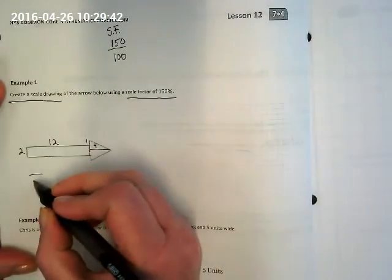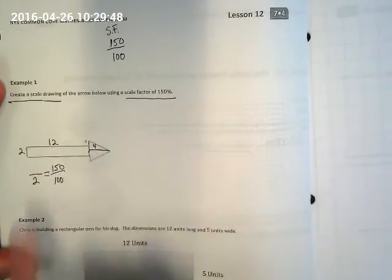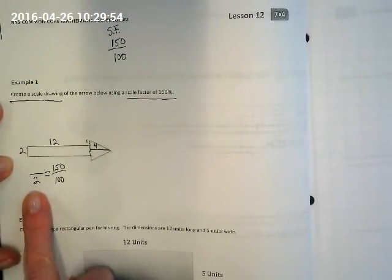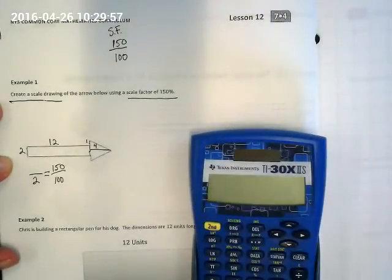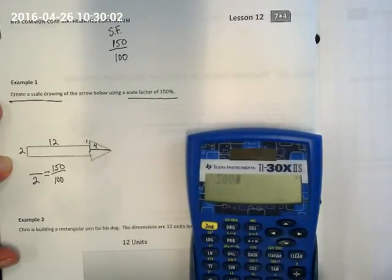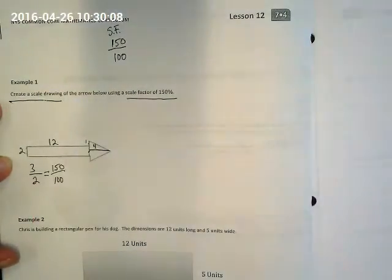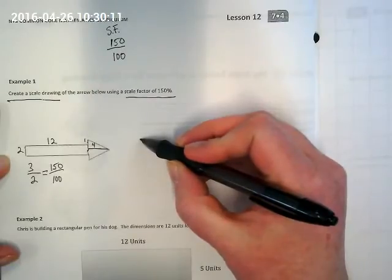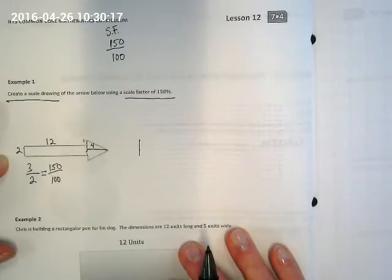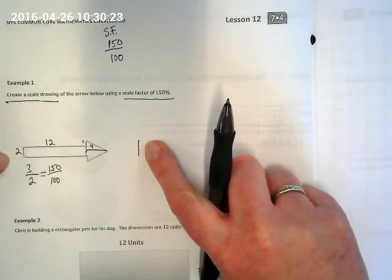So we're going to set this up as, remember the original always goes where? On the bottom. And it's going to equal 150 over 100 because that 2 is our 100% of the original line. And if we cross multiply that, 2 times 150 is 300, divided by 100, we get 3. That means for the arrow we're going to draw on this graph paper, we're going to make a line that goes 1, 2, 3. We just made this line here 150% bigger than this one down here.